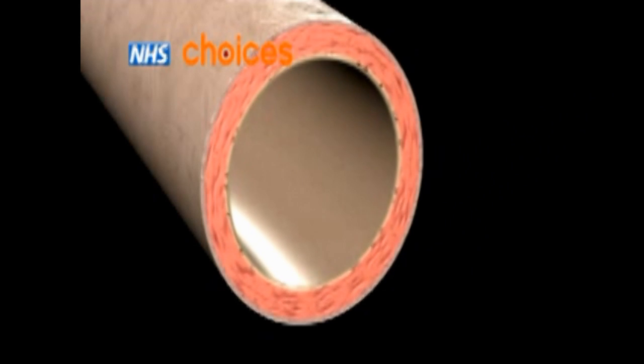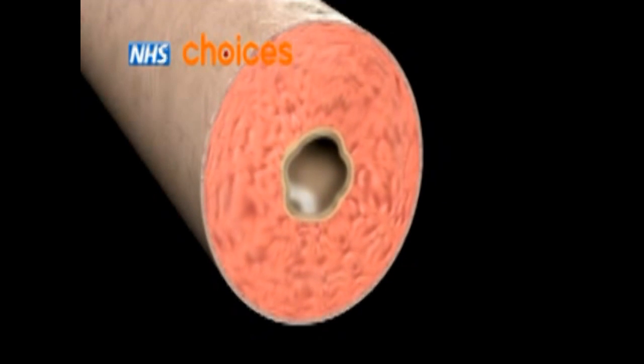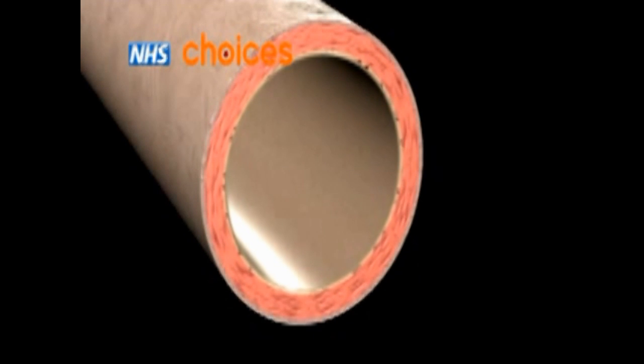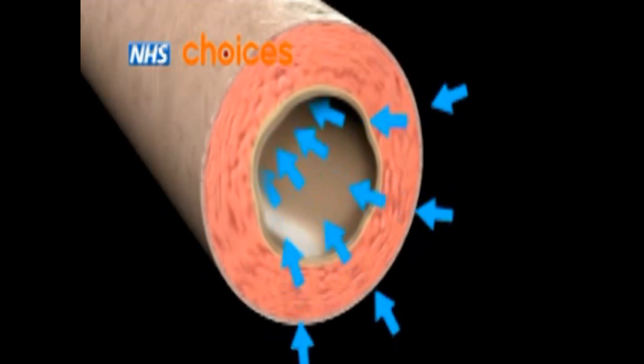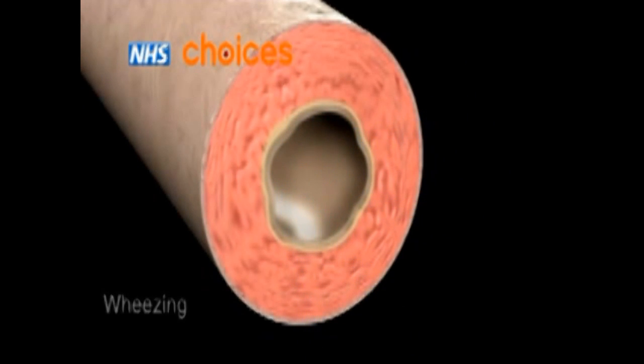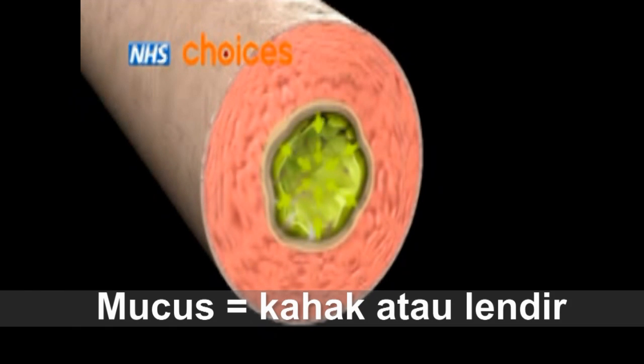Allergen menyebabkan salur pernafasan menjadi bengkak, dan otot di sekitar akan menjadi ketat. Salur pernafasan yang ketat akan menyebabkan nafas berbunyi seolah-olah bersiul yang dipanggil wheezing. Mukus akan terbentuk dan menyebabkan lebih sekatan dan batuk.